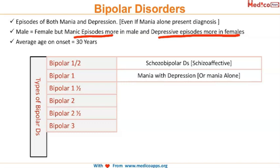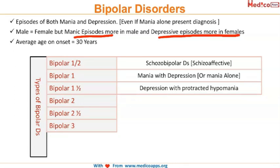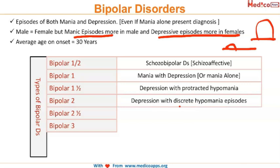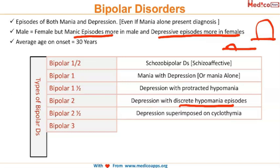Bipolar one is mania with depression, or mania alone. Bipolar two involves depression with discrete hypomania episodes. Hypomania is when the elevation of mood is not high enough to make a diagnosis of mania — mania is at a higher level, hypomania is lower. In bipolar two the hypomania is discrete, whereas in the subtype with protracted hypomania it is prolonged.